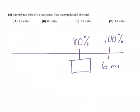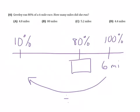Okay, it's really easy to find 10%. To find 10%, we just divide by 10. And when we divide by 10, everybody just shifts down a place value. So six divided by 10 is six-tenths, or 0.6. So that's 10% of the race.